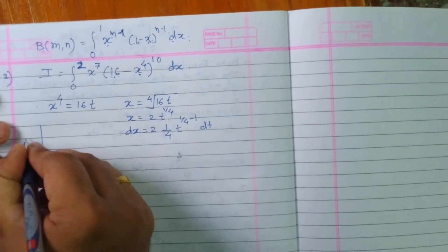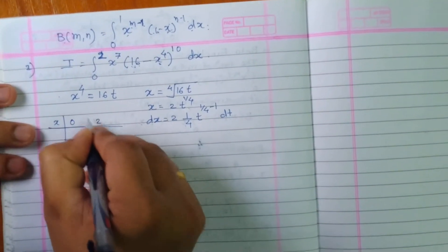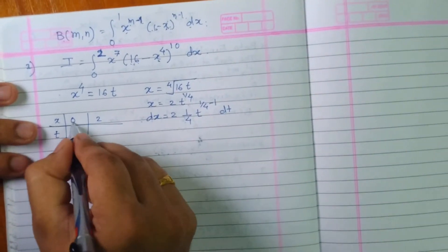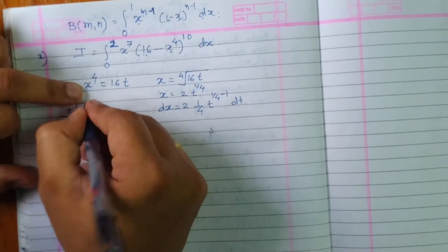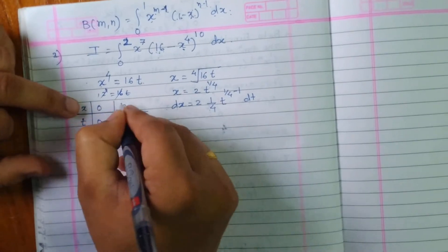Now what is the change in the limits? The limits of x are 0 and 2. What are the limits in t? When x equals 0, t is also 0. When x equals 2, we get 2 raised to 4, that is 16, equals 16t. So t equals 1.